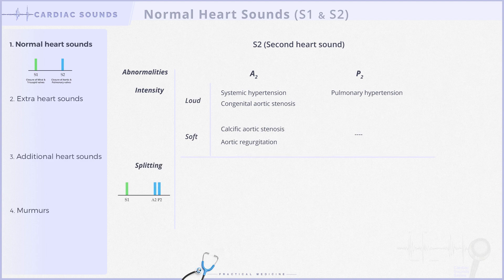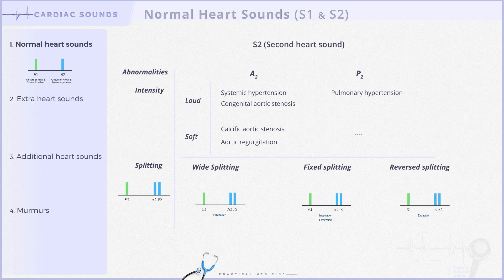After discussing S2 intensity, let's now explore abnormalities in S2 splitting. S2 splitting can fall into one of three subcategories: wide physiological splitting, fixed splitting, and reverse splitting.